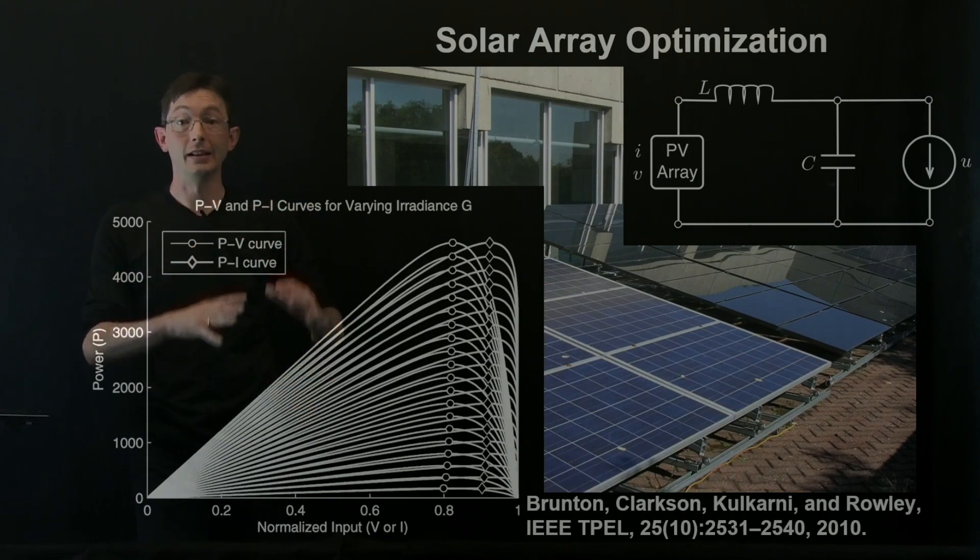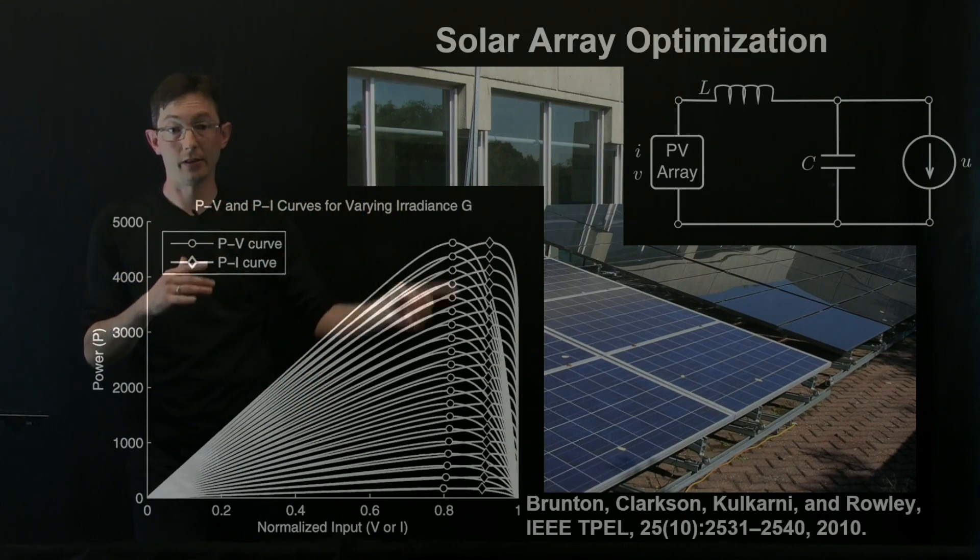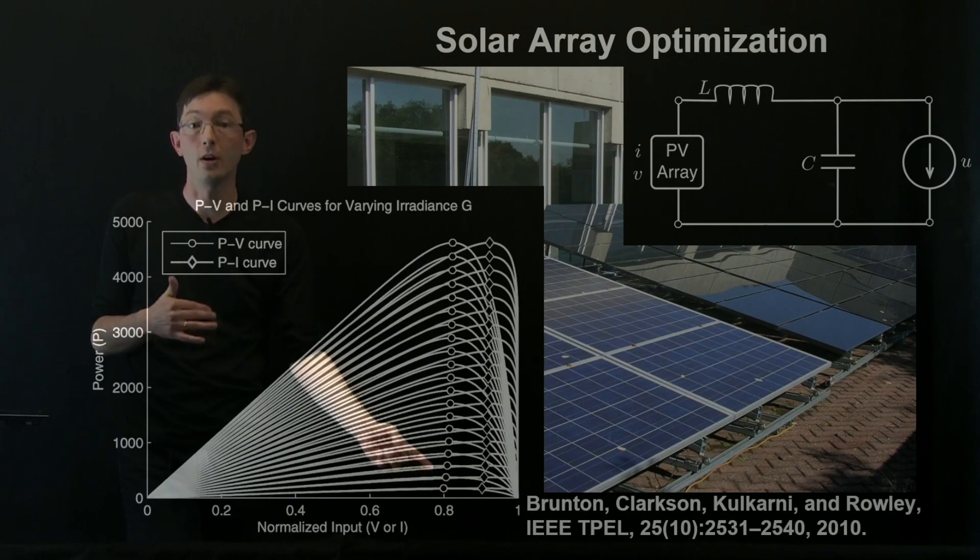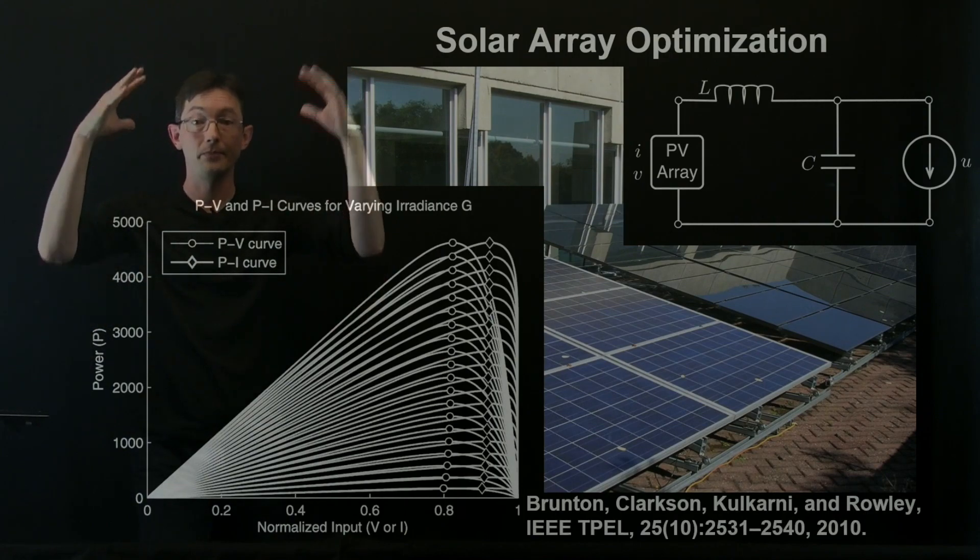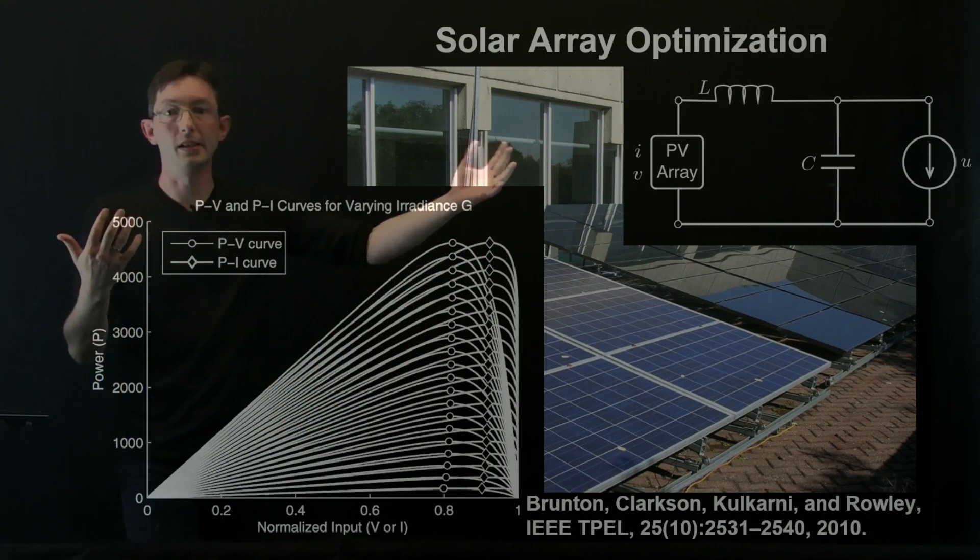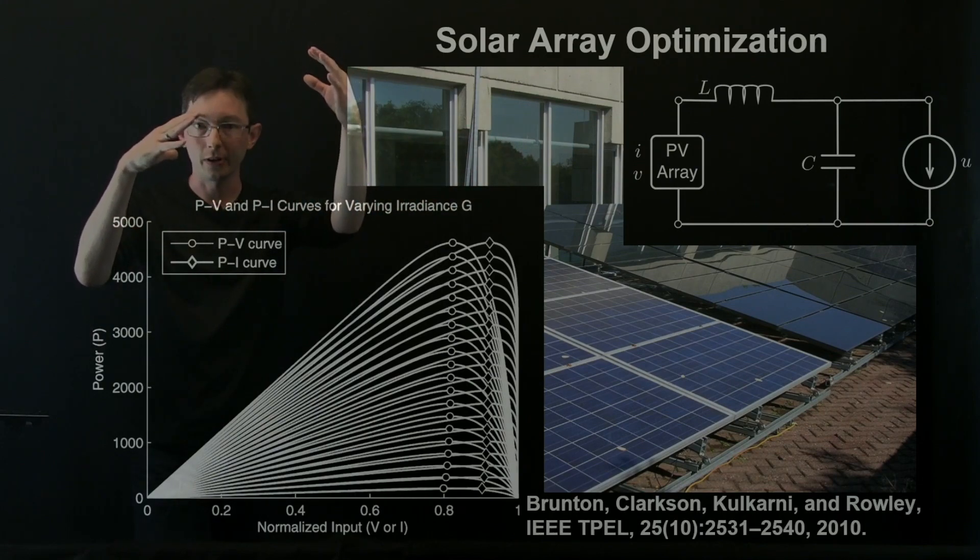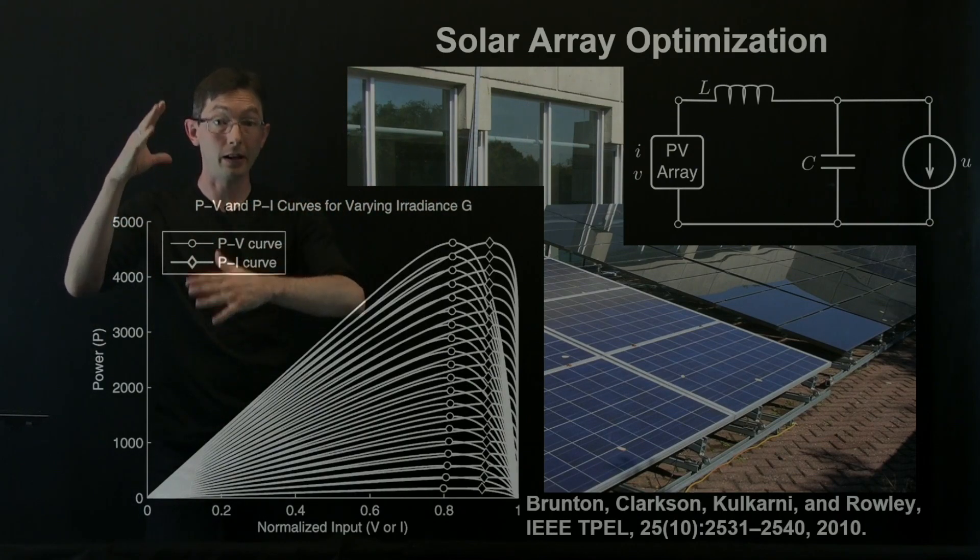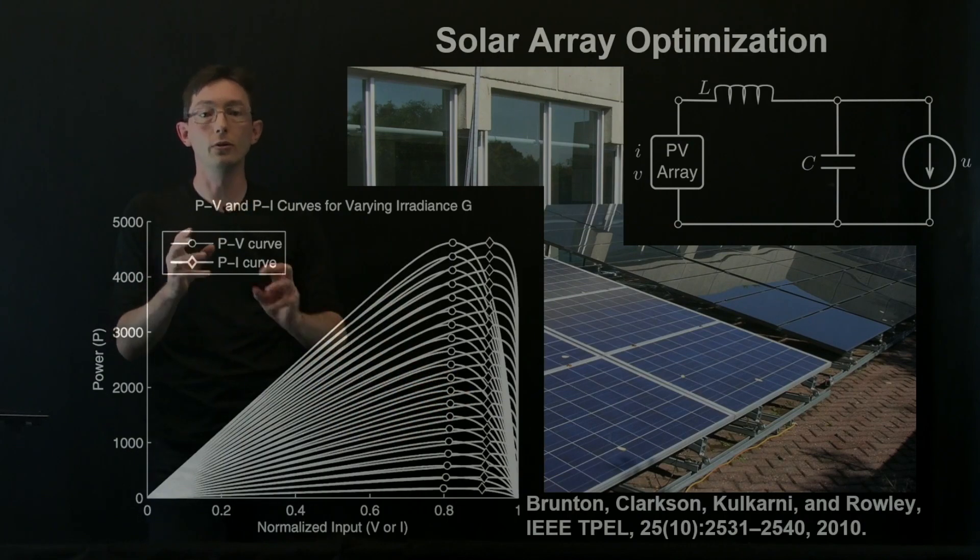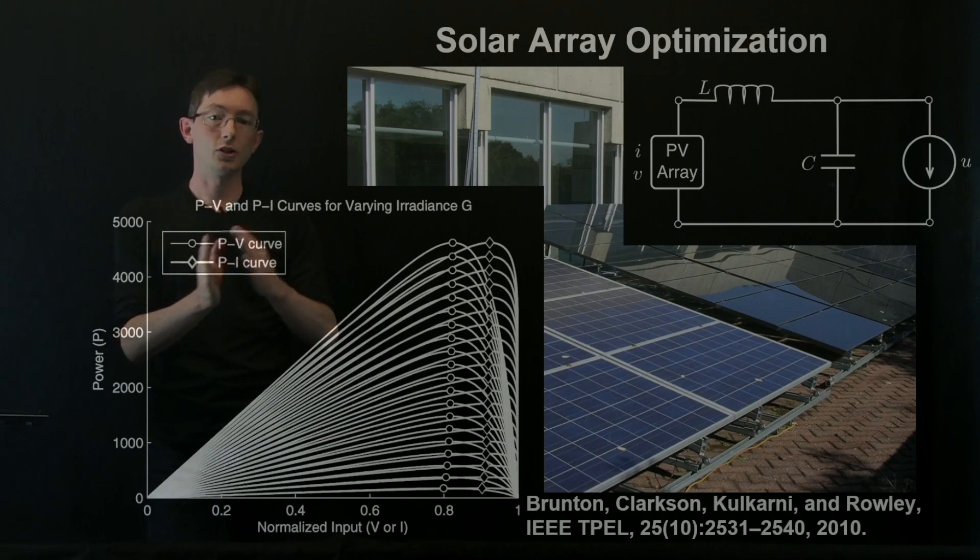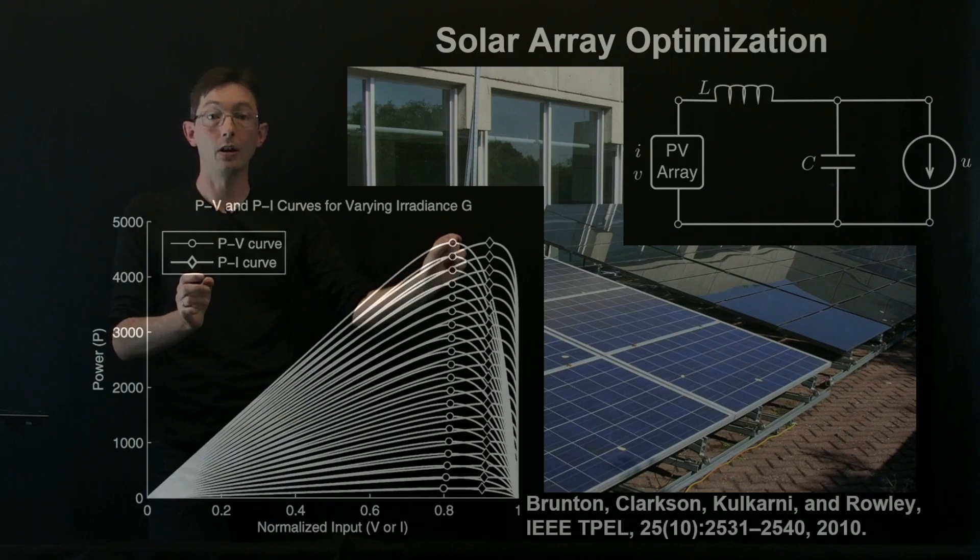And this is as the irradiance, as the amount of sunlight changes. So the lowest curves here are for low solar irradiance and the highest curves here are for very high solar irradiance. And in the middle of Princeton, New Jersey, you have clouds coming over during the day, you have this massively varying solar irradiance even over the course of minutes or seconds, let alone hours. And so the idea is that you're going to have to move, this is normalized, so you're going to have to change your set voltage or current throughout the day to maintain this peak power or else you're going to have suboptimal performance.